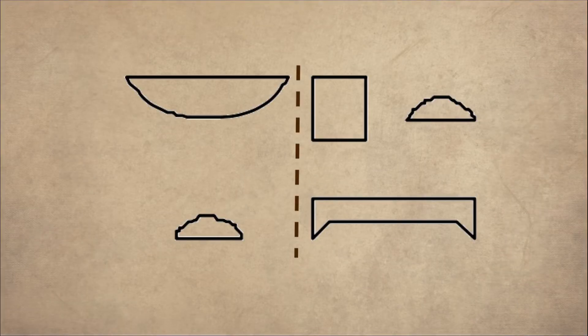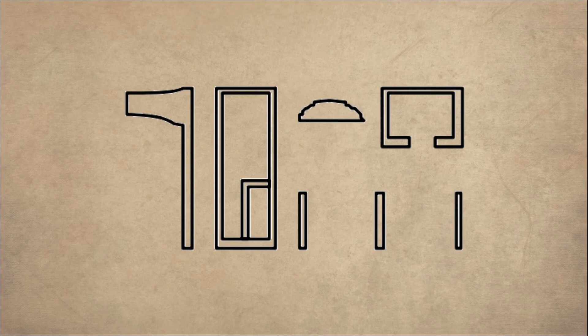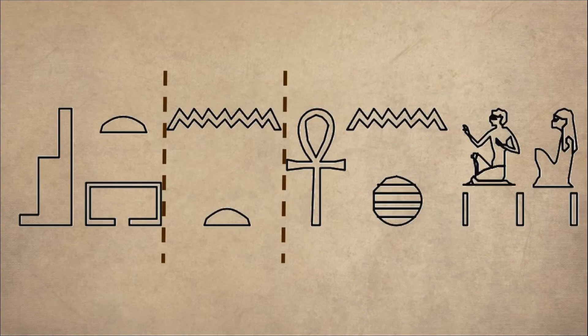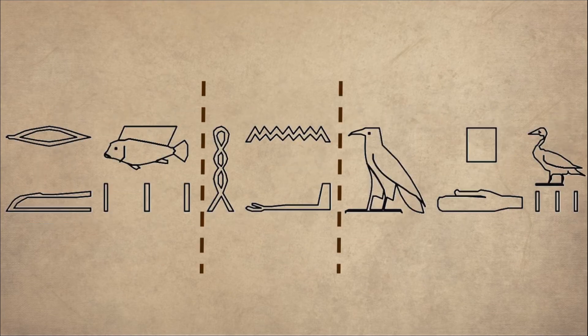Nebet pet, mistress of the sky. Hawout nature, temples. Set net ankhou, place of the living. Remou hanh a-p-d, fish and birds.